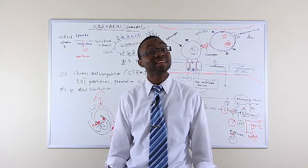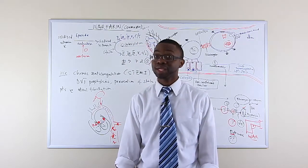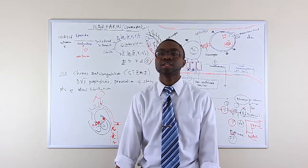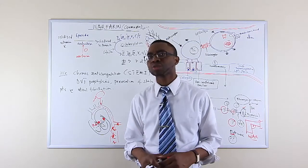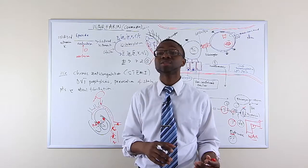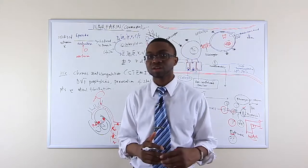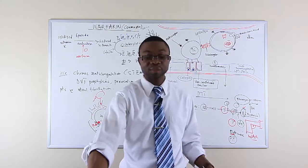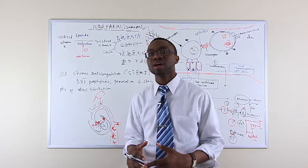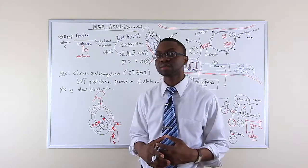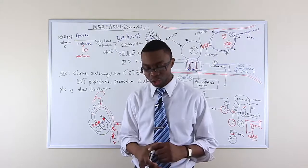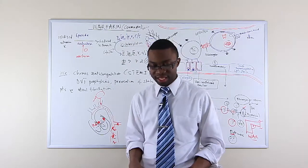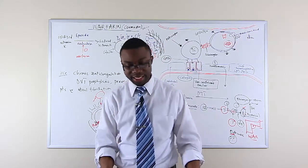We cannot give Coumadin for pregnant patients. It's a teratogen. The reason is because Warfarin can cross the placenta compared to Heparin. Heparin does not cross the placenta. So that's a big difference between both of them. So in a pregnant female that develops a DVT or develops a pulmonary embolism, you can put them on Heparin, but you cannot give them Coumadin. And we always monitor the PT and INR values in patients that have taken Warfarin.